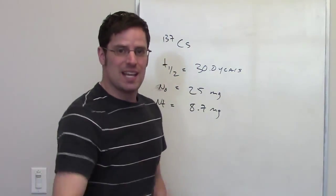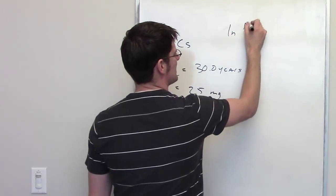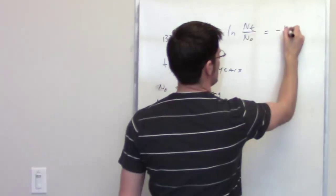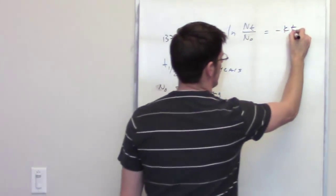So there's an equation that I gave you guys in the video that says that the natural log of n sub t over n sub 0 is equal to negative kt. The t is what we're trying to find out.